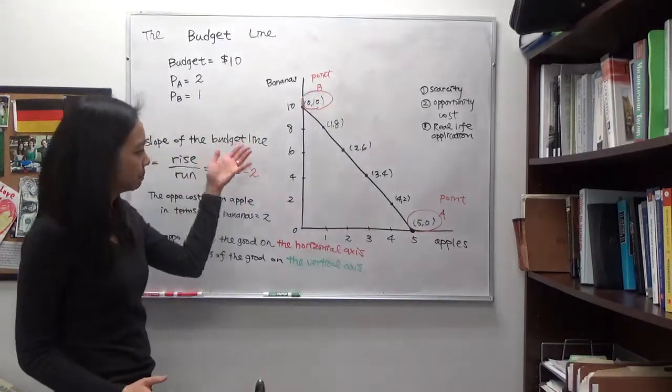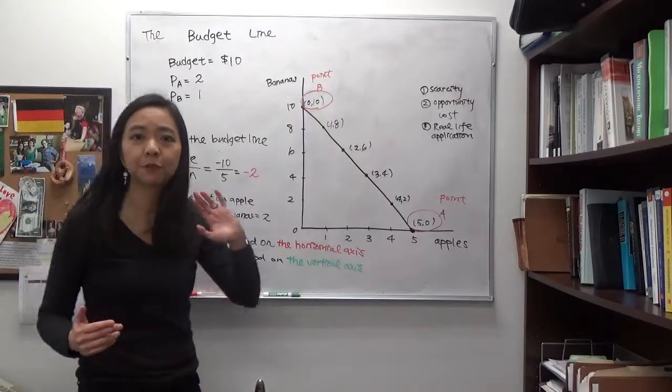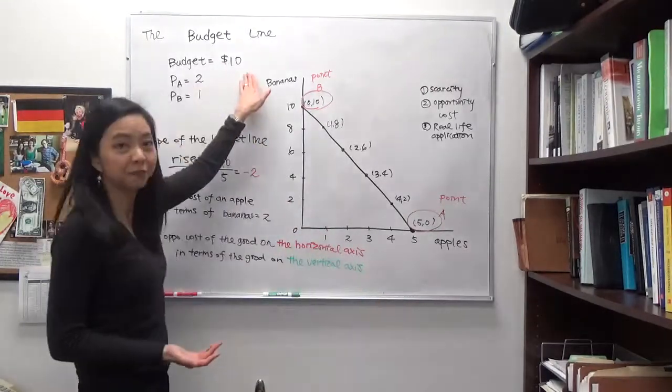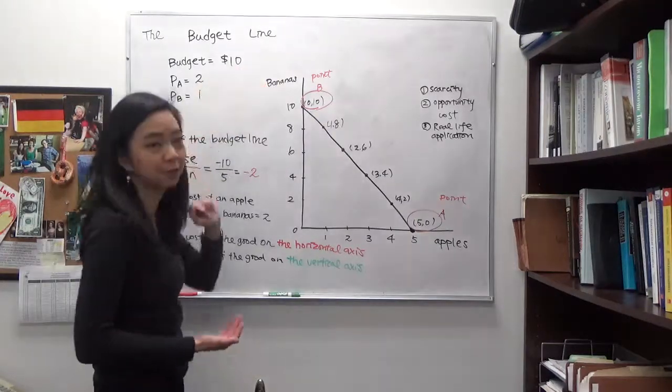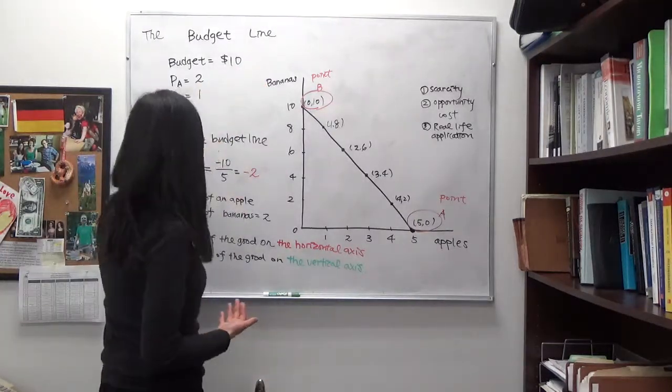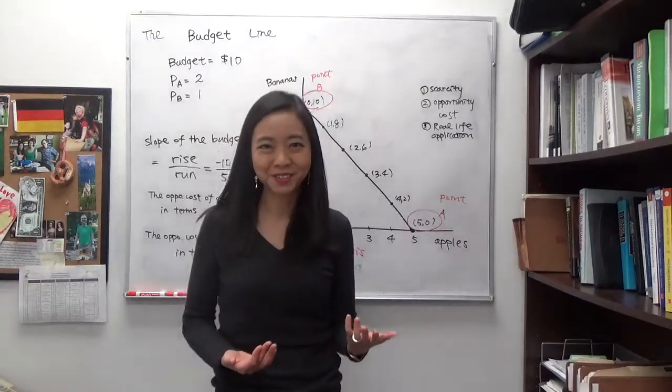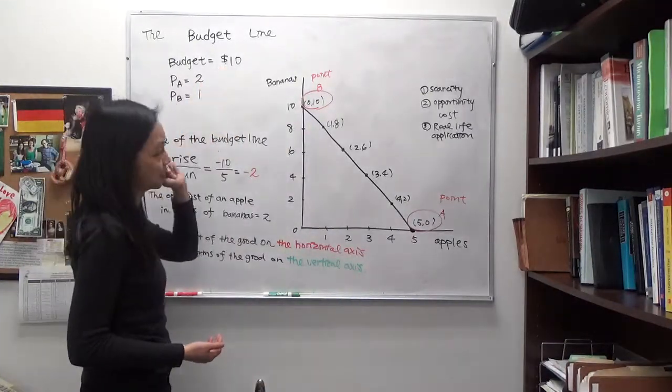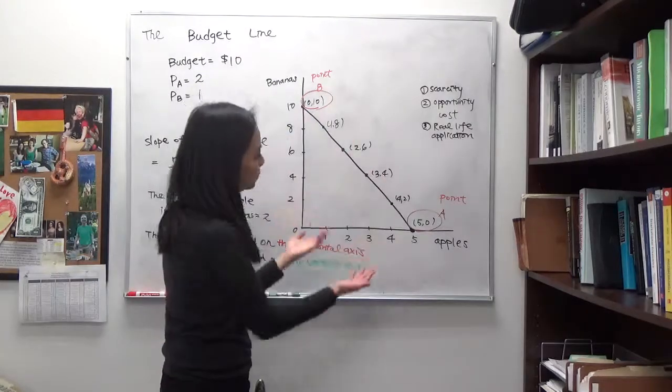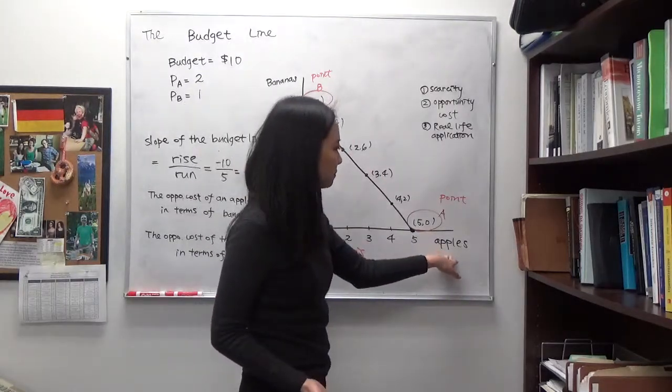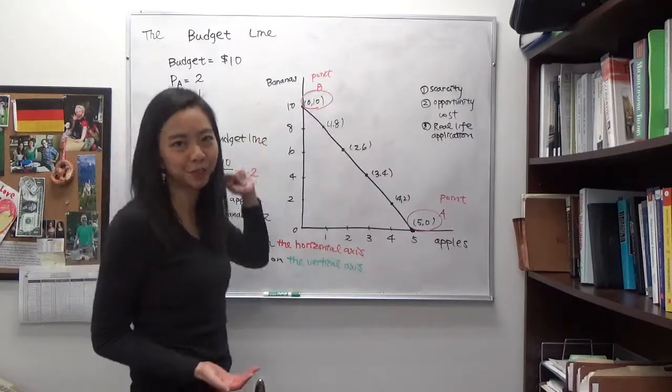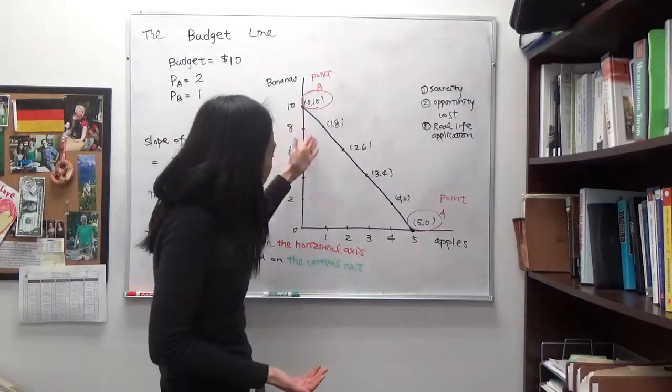How can you buy these apples and bananas? If you use all the budget to buy apples, then you can buy 5 apples because 10 divided by 2 will give you 5. And if you use all the budget on buying bananas, then you can buy 10 bananas because 10 divided by 1 is 10. We're going to put our apples on the horizontal axis and our bananas on the vertical axis. So you can draw a budget line.